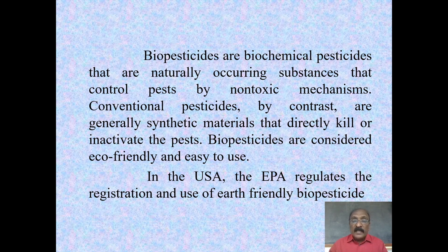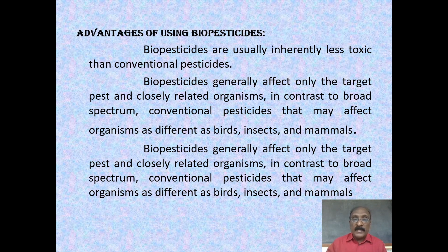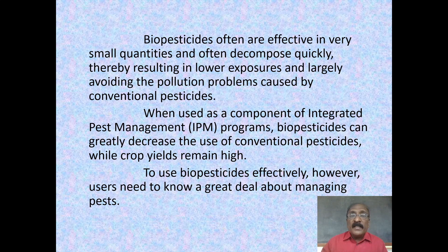Advantages of using biopesticides: biopesticides are usually inherently less toxic than conventional pesticides. They generally affect only the target pest and closely related organisms, in contrast to broad-spectrum conventional pesticides that may affect organisms as different as birds, insects, and mammals. Biopesticides are often effective in very small quantities and often decompose quickly, resulting in lower exposures and largely avoiding the pollution problems caused by conventional pesticides.